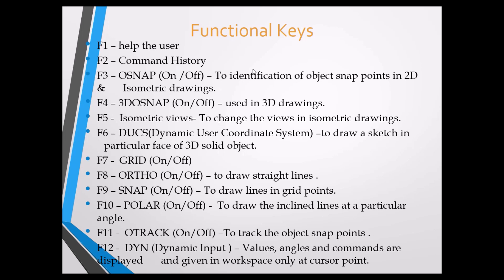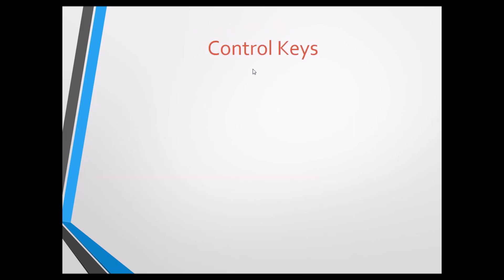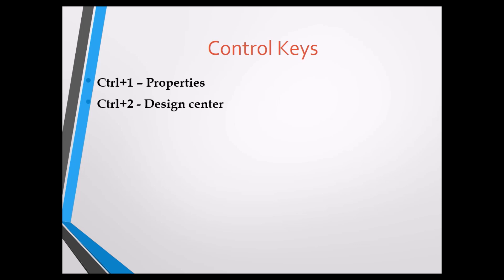Next are the Control Keys — combinations of Ctrl with numbers or alphabets. Ctrl+1 opens the Properties panel to get properties of a selected object. Ctrl+2 opens the Design Center, where you can access standard drawn objects related to mechanical or electrical fields and drag them into the workspace. Ctrl+8 opens a Calculator. Ctrl+9 toggles the Command Line window on or off.